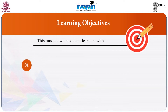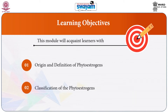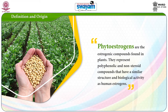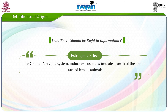The module will acquaint learners with the origin and definition of phytoestrogens and classification of phytoestrogens. Phytoestrogens were first described in 1926. The name comes from the Greek word phyto meaning plant and estrogen which means a sex hormone. Phytoestrogens are estrogenic compounds found in plants. They represent polyphenolic and non-steroidal compounds that have a similar structure and biological activity as human estrogens. They exert estrogenic effects on the central nervous system, induce estrus and stimulate growth of the genital tract in female animals.